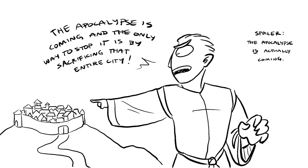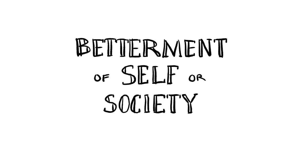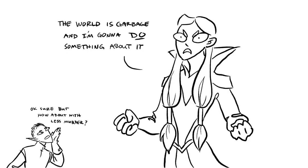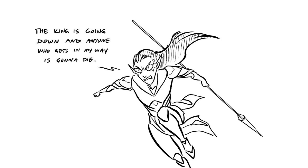Desperation and fear allow for more morally gray areas for your antagonist to live in. Bonus points if they're actually right about an issue and their fear is justified. Betterment of self, society, or the world is where your well-intentioned extremists live — they want the world to be better, but their solution is just terrible. Justice or revenge: they've been wronged, and someone is going to pay for it. These motivations tend to give villains a special kind of tunnel vision that they can't be dissuaded from.